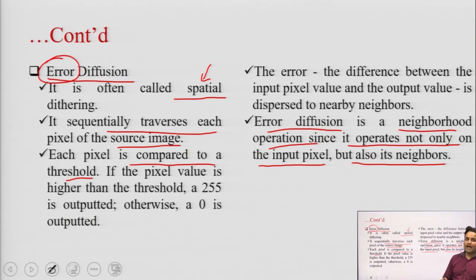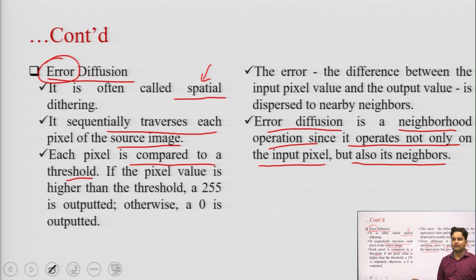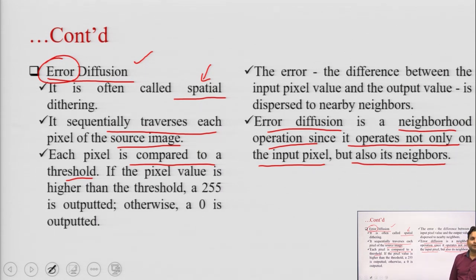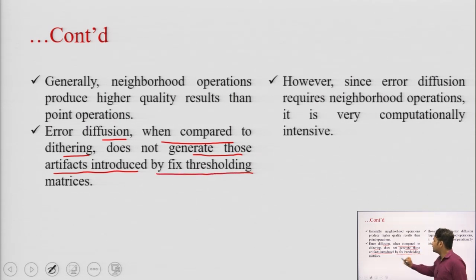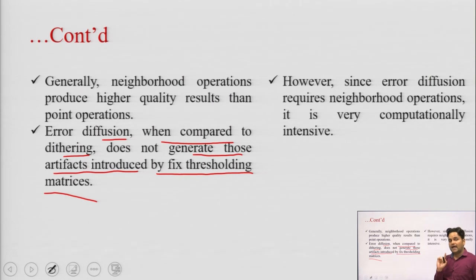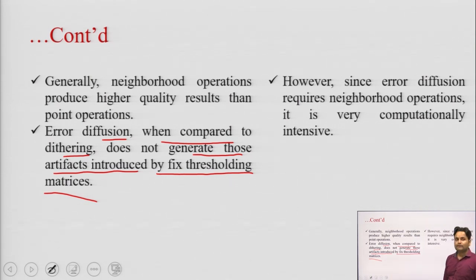After identifying the difference between the neighborhood pixels, you can obtain the output image in the error diffusion method. Dithering is used in the halftoning process, but error diffusion is a slightly more advanced version in which we choose to operate on neighborhood pixels. In dithering the matrix is fixed — once the user has defined a dither matrix it cannot be changed — but in error diffusion it can be changed according to the neighborhood pixel. Error diffusion does not generate the artifacts introduced by fixed threshold matrices.